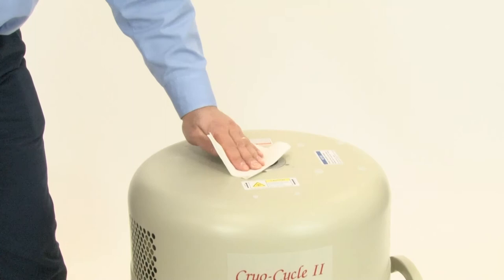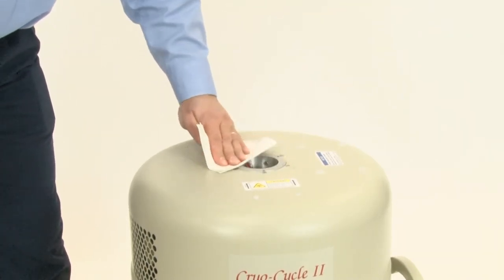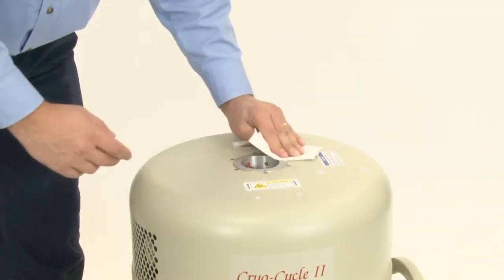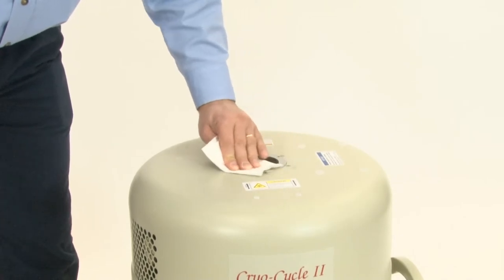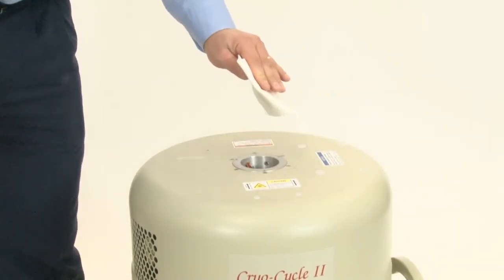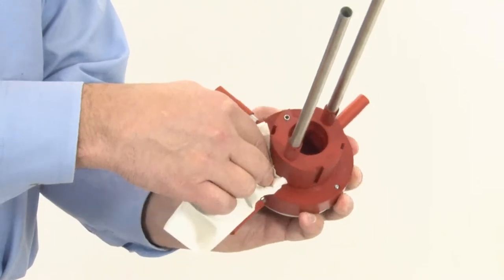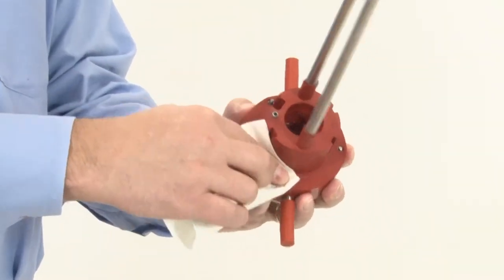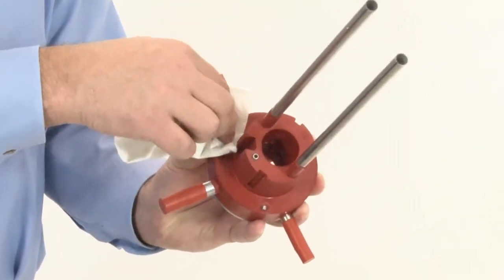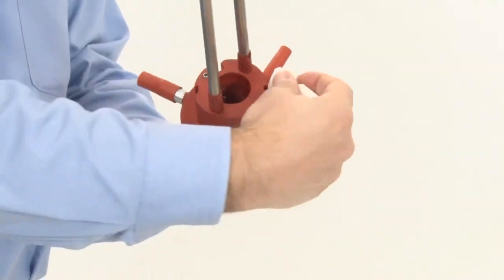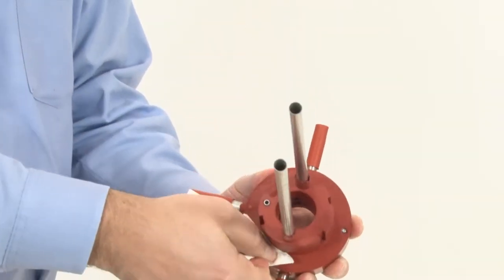So the first thing we do is we take a towel and clean off the surface of the cryocycle where the collar will be installed. The next thing you do is you take the collar and do the same thing. You clean off the mating surface of the collar. Make sure there's no debris, dust, or contaminants in the way for making the seal.